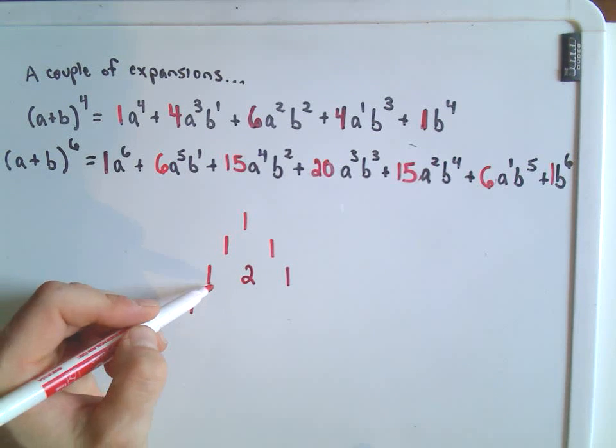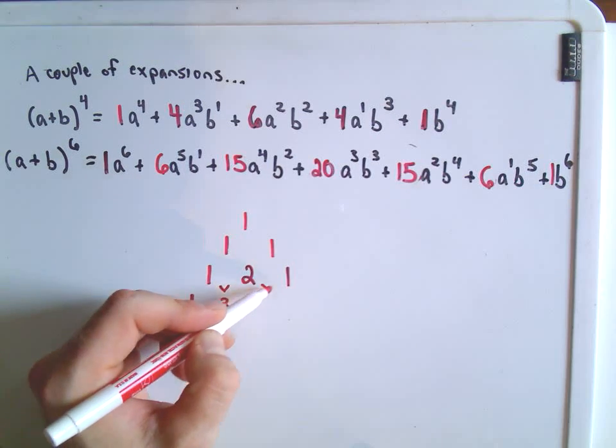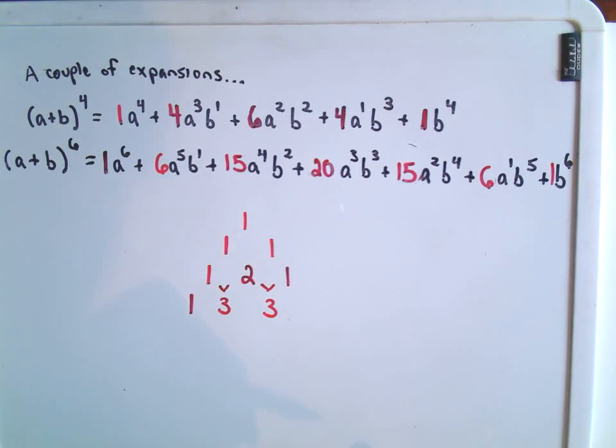So I'm going to put another 1 over here. If I add 1 and 2, I'm going to get 3. If I add 2 and 1, I'm going to get another 3. And then I'm going to drop down another 1.